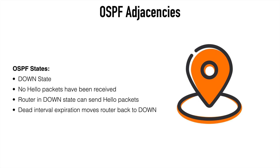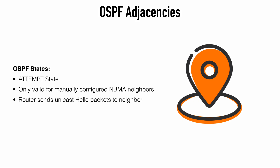The first state is the down state. This means that we've configured OSPF on a router, but no hello packets have been received from a neighbor. A router in the down state can still send hello packets out to a neighbor. If we have a full adjacency and we stop receiving OSPF packets to the point where our dead interval reaches zero, then OSPF will move back to this down state. Next is a special state only valid for manually configured NBMA neighbors called the attempt state. Here a router will send unicast hello packets to a manually configured neighbor when no hello messages have been received within the dead interval.